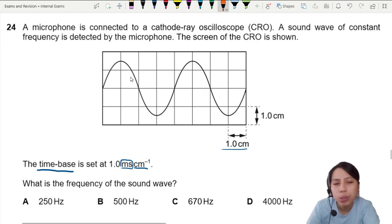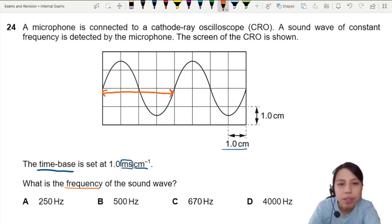So maybe what we can do is try to find frequency. We try to find how many cm is one cycle. It's going to be 1, 2, 3, 4, so 4 cm for one cycle related to period.